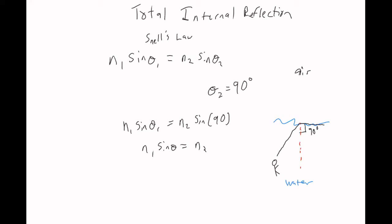The other vocabulary word we saw for this was critical angle. If something is at the critical angle, then you set theta two equal to 90 degrees, and you have a picture that looks like this.